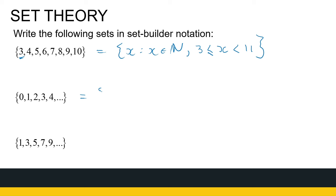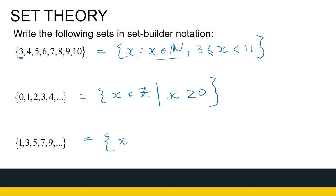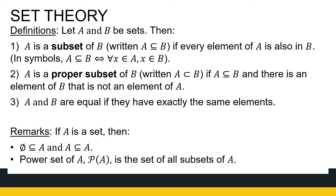If I want to write a tabulated set in set builder notation, I can write it as all X's in the integers given that integer is greater than or equal to zero — all positive integers. Or you can say it's all natural numbers including zero. For 1, 3, 5, 7, and so on, there are a couple of ways to write that — all the natural numbers given X is odd, or you can use a formula to calculate the odd numbers. So there are different ways to write a tabulated set in set builder notation.